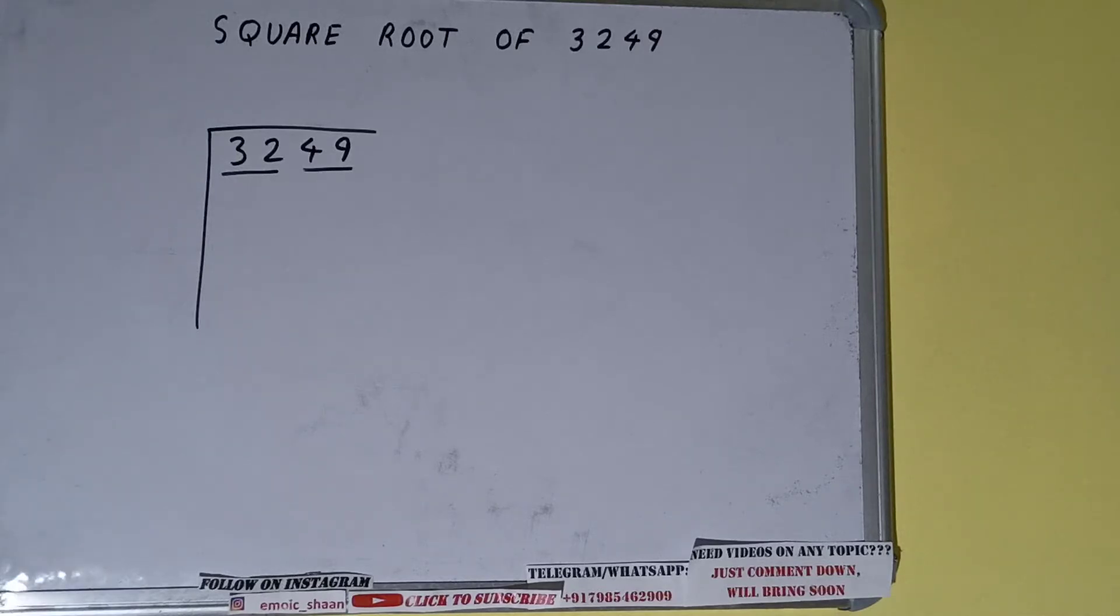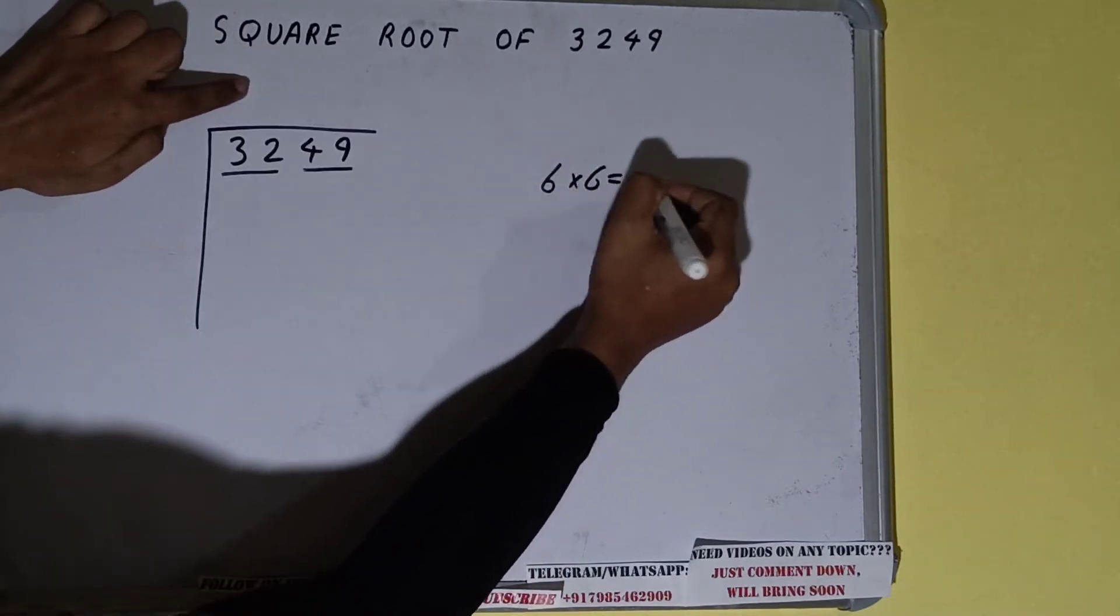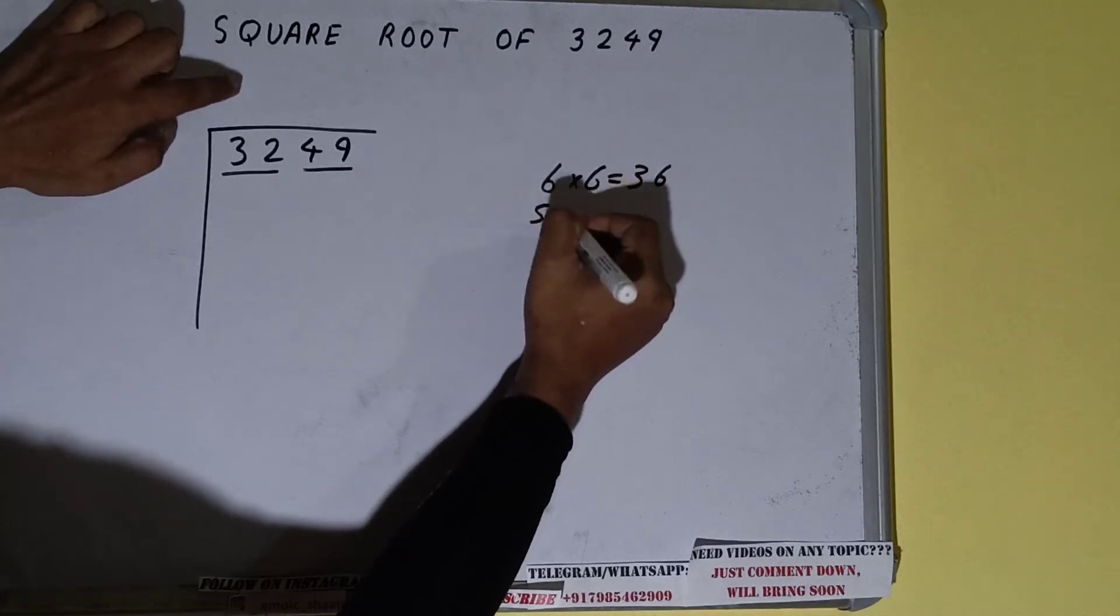The rule is whatever number we write here, we have to write here also. So if we write 6 here and 6 here, we'll get 36. If we write 5 here and 5 here, we'll get 25.